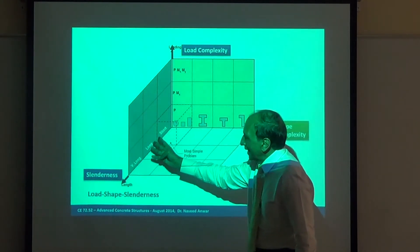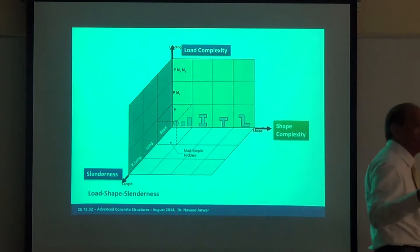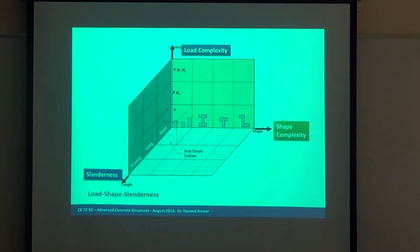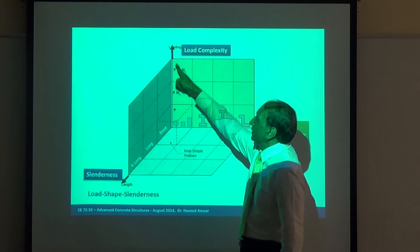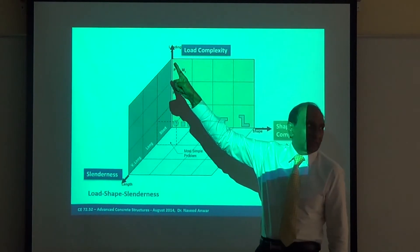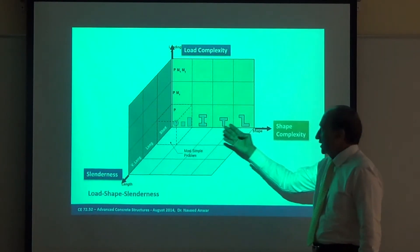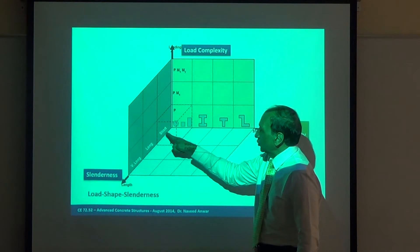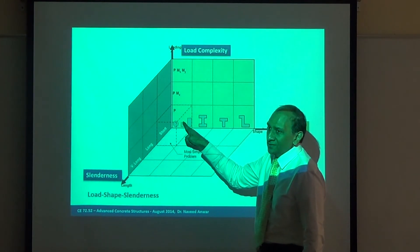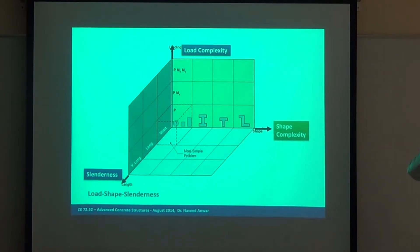The third complexity is loading: only axial load, axial load plus moment, axial load plus double moment, axial load plus shear, axial load plus torsion, and so on. So the vertical axis is complexity of loading, this axis is length, and this axis is cross-section shape. If you take a short column with only axial load P and a simple shape, you can do hand calculations — it is easy.